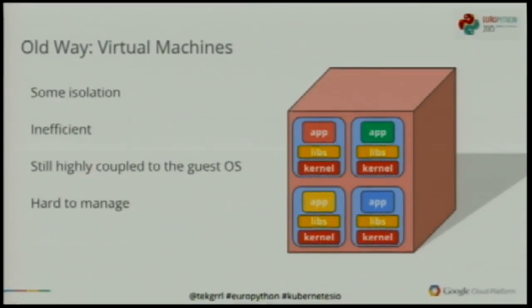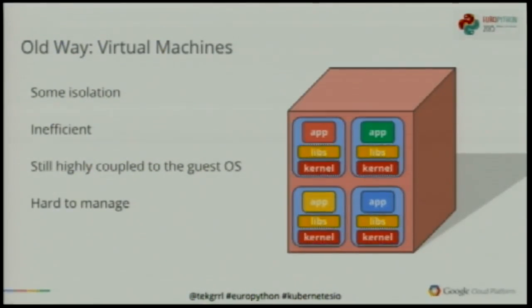Applications are highly coupled to the operating system — this is a problem. So we created virtual machines. We stuck a layer on top of the hardware called a hypervisor, giving us an idealized piece of hardware on which we could run multiple operating systems. That gives us some isolation — now we can run applications in their own virtual machine. If one application crashes, it doesn't affect the others. But it's extremely inefficient, because we have the operating system kernel — when you install a virtual machine, you have to install the entire Debian or CentOS or Windows stack. There's still tight coupling between the operating system and the application.